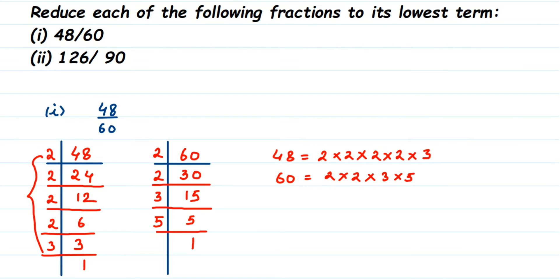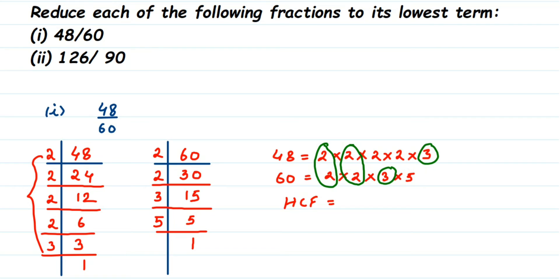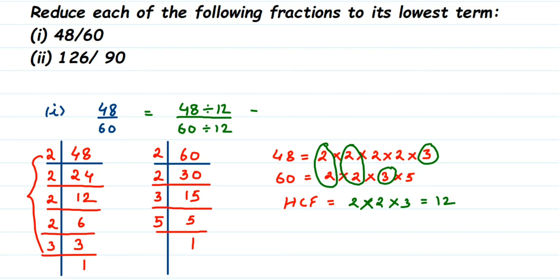Now find the HCF by identifying factors present in both numbers. 48 = 2 × 2 × 2 × 2 × 3 and 60 = 2 × 2 × 3 × 5. The common factors are 2, 2, and 3. Multiplying these: 2 × 2 × 3 = 12. So HCF is 12. Divide 48 by 12 to get 4, and 60 by 12 to get 5. The answer is 4/5.